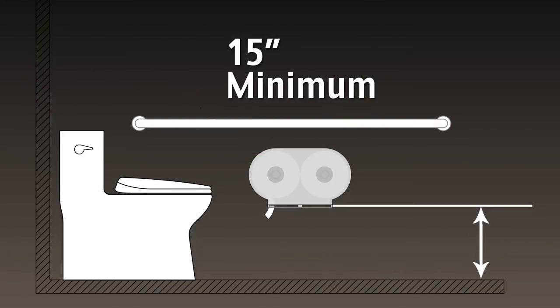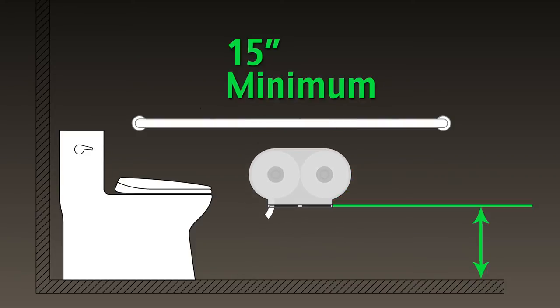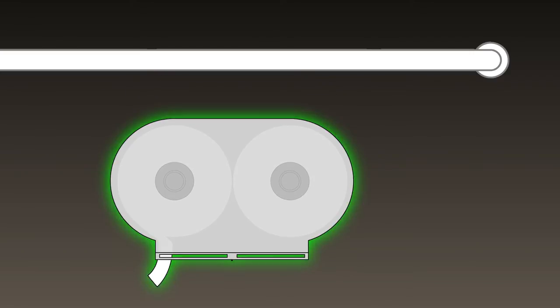If the toilet paper dispensers are installed below the sidewall grab bar, the outlet of the toilet paper dispenser must be 15 inches minimum above the finished floor. Again, be sure to leave enough room between the grab bar and the top of the dispenser to allow access to the dispenser's locking mechanism.